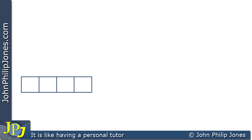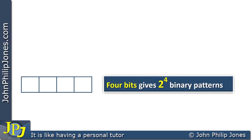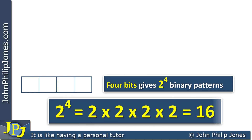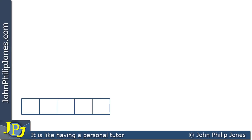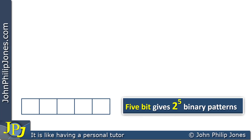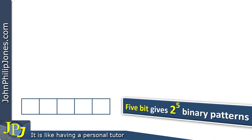Carrying on, we can look at four bits, and four bits gives two to the four binary patterns. That is two times two times two times two, which we know to be 16. And we can look at the next example showing five bits — five bits gives two to the five binary patterns. I'll leave that for you to work out: what is two to the five?